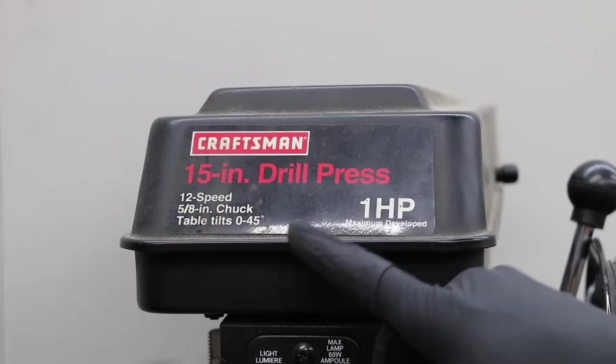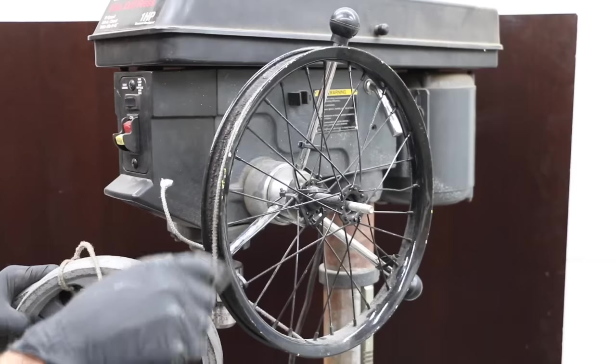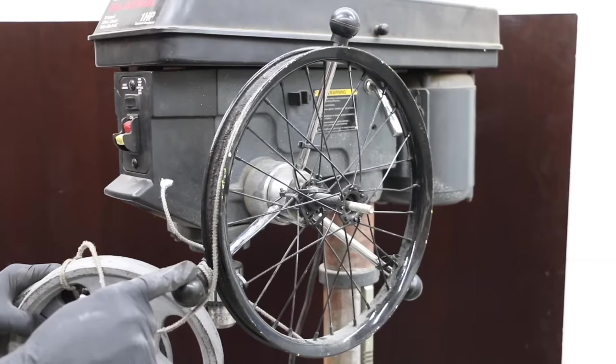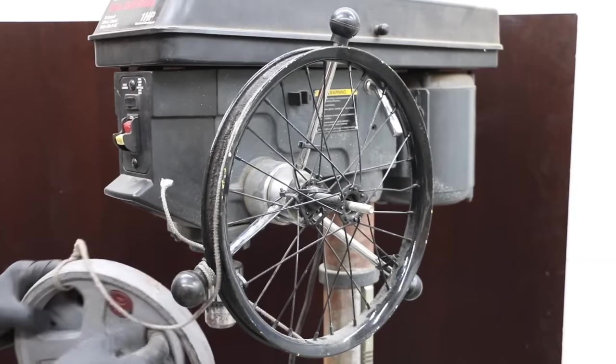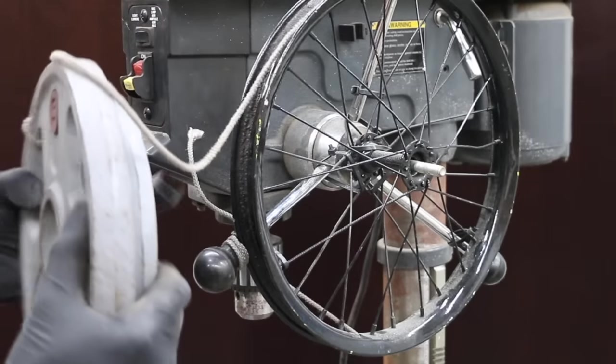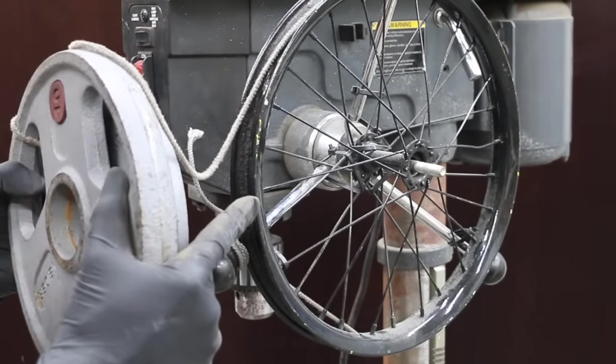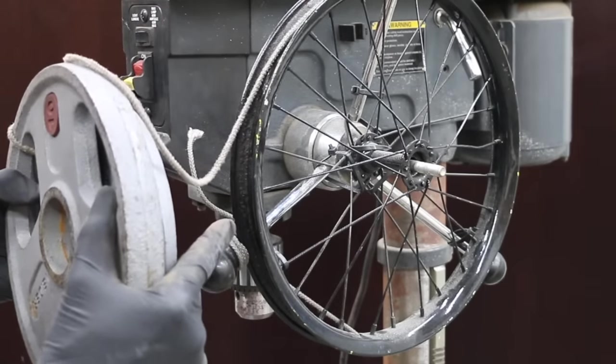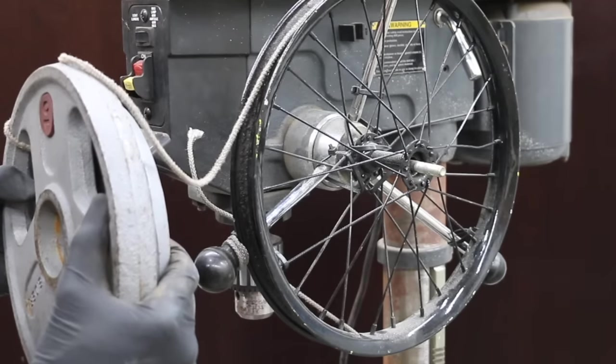I'll be testing the twist drills using the Craftsman 15-inch drill press. I'm going to attach a small wheel to the drill press in order to apply a constant downward force. I'm also going to be adjusting the amount of weight applied to this wheel so the amount of downward force is going to change based upon the diameter of the drill bit as well as the type of metal that we'll be drilling.